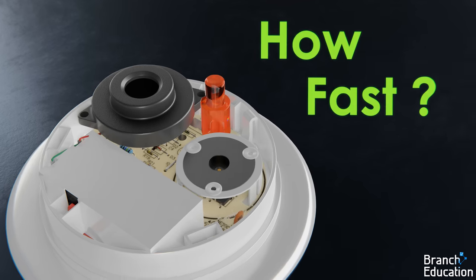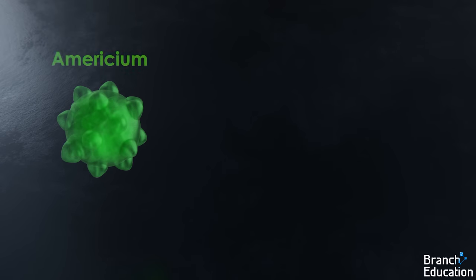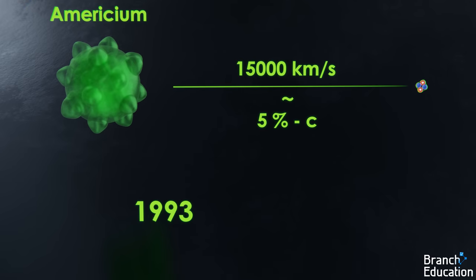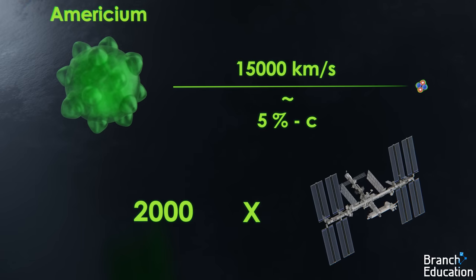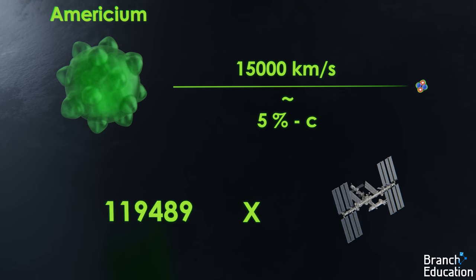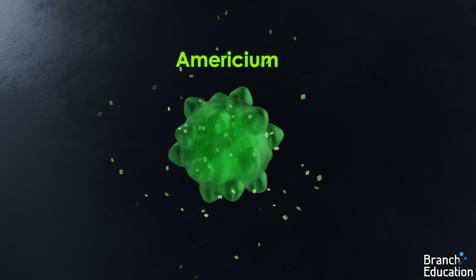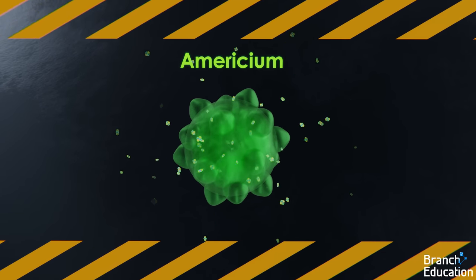How fast? Well, they're ejected from the americium nucleus at around 15,000 kilometers per second, which is about 5% the speed of light, or 2,000 times faster than the International Space Station, or 419,000 times faster than a cheetah.